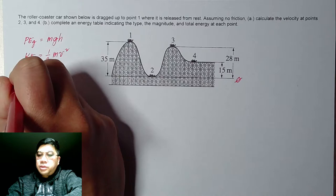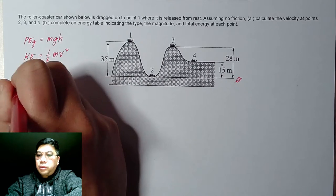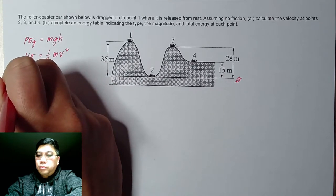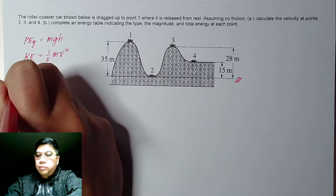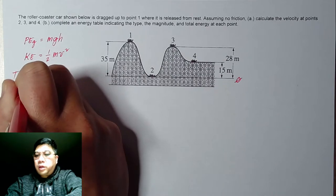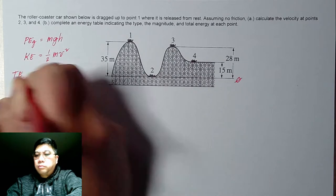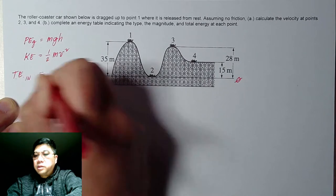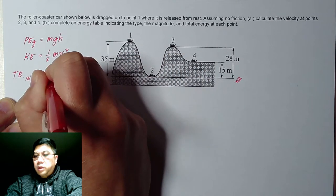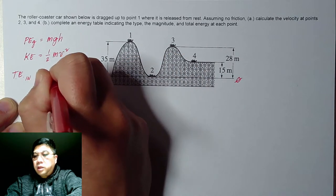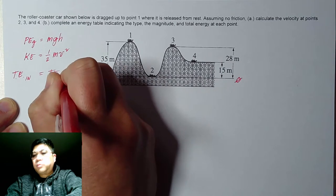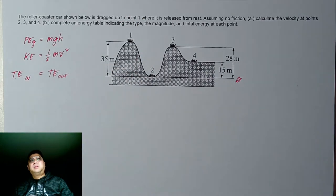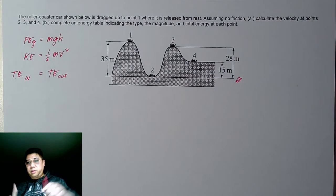The incoming total energy is the same as the total energy at every point. Total energy should be equal at all points — this is the conservation of energy principle we will apply throughout.